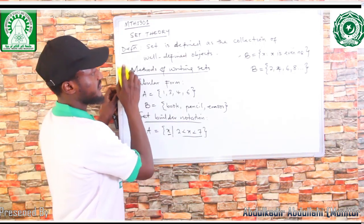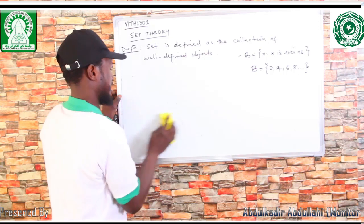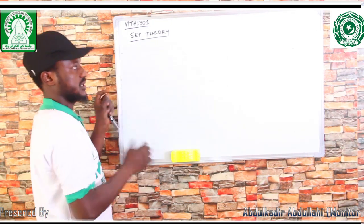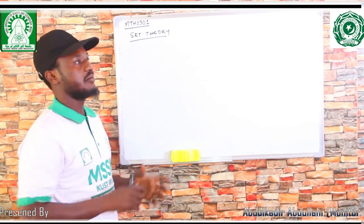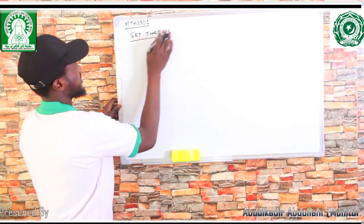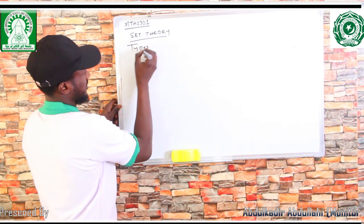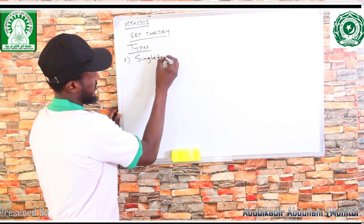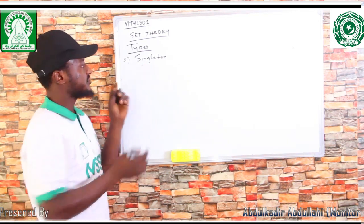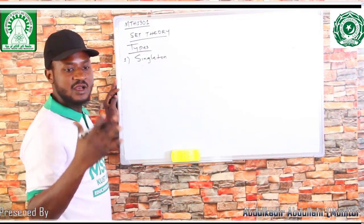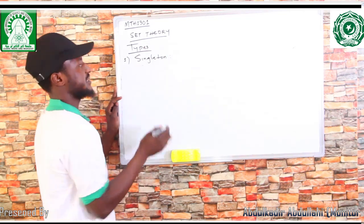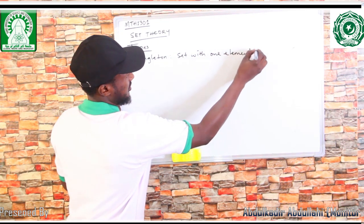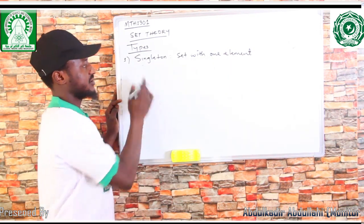Now, after the methods of writing sets, let's take a look at some types of sets, which are very important — because without knowing the types of sets, we cannot perform some operations on them. There are many types of sets. Number one, we have what we call singleton. From the name 'single,' it means it's just a set that has only one element. When a set has one element, it's called a singleton — a set with one element.